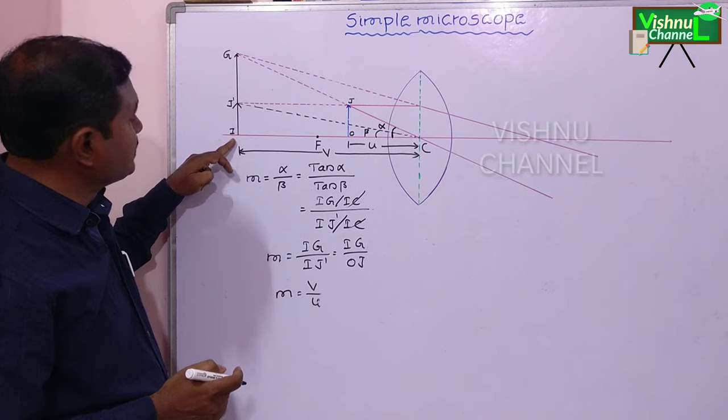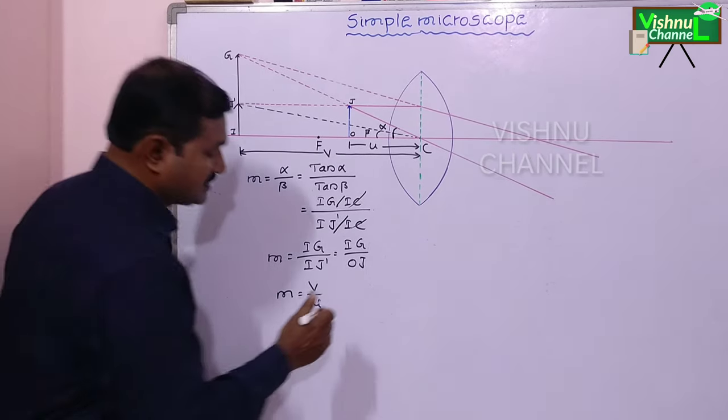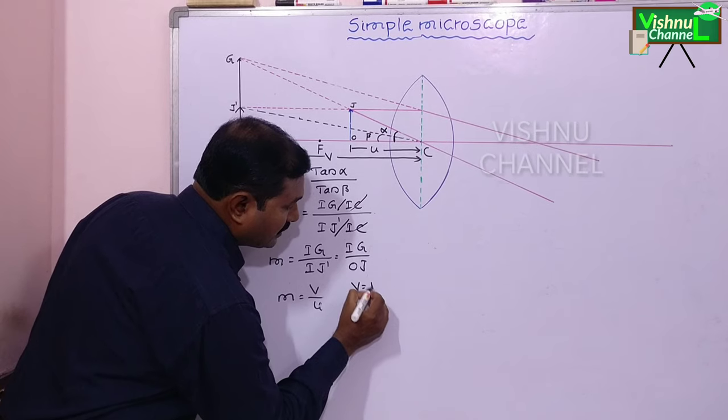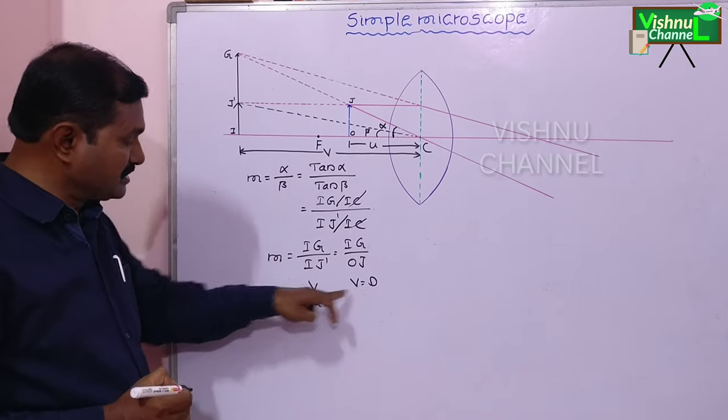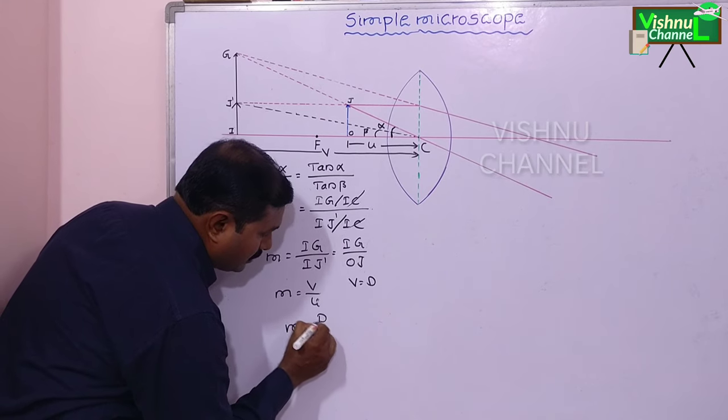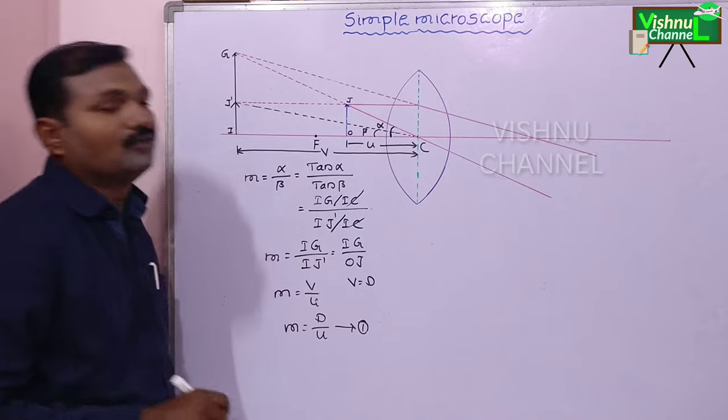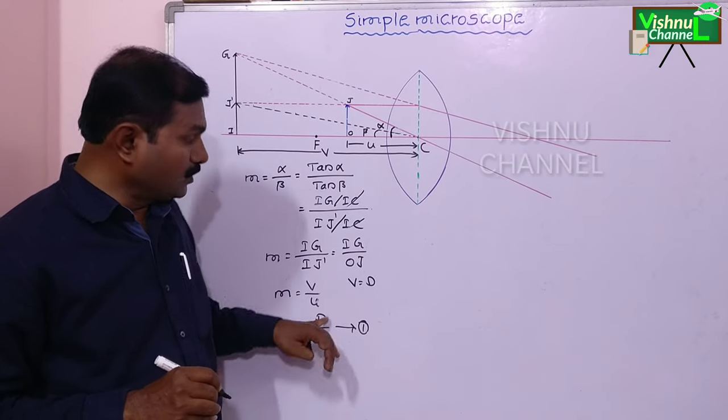If the image is formed at a distance of least distance of distinct vision, at that time V is equal to D. We substitute this value in this equation. M is equal to D by U. Let this is equation number 1.